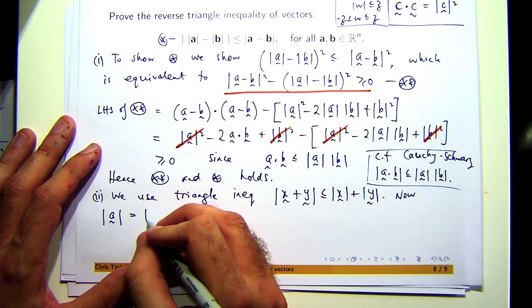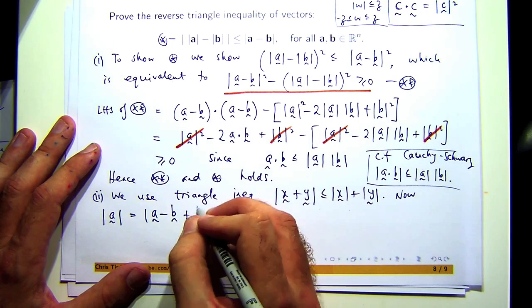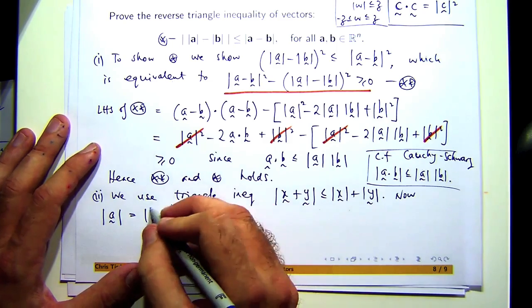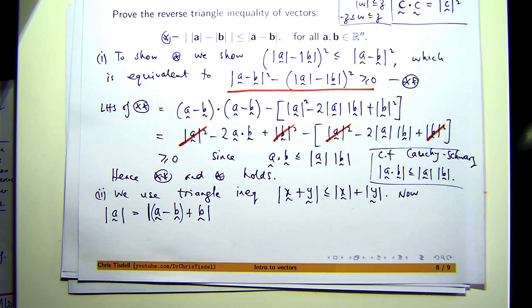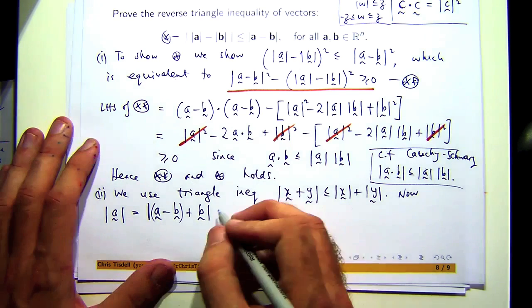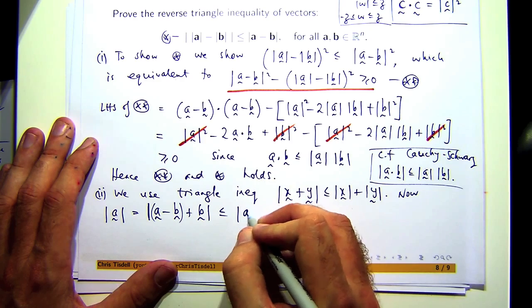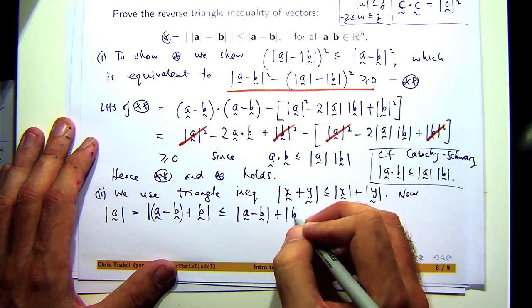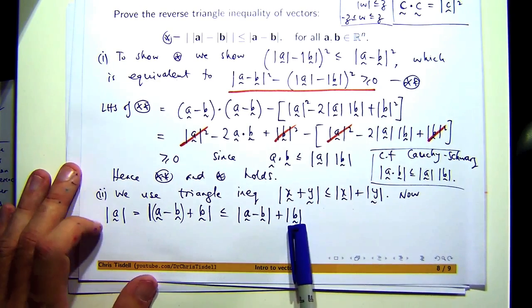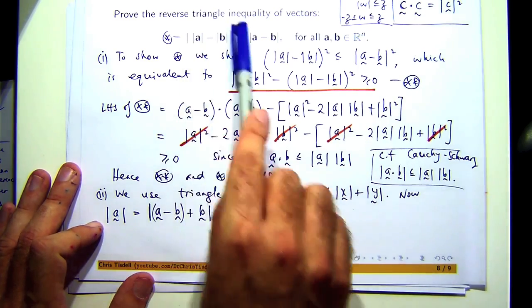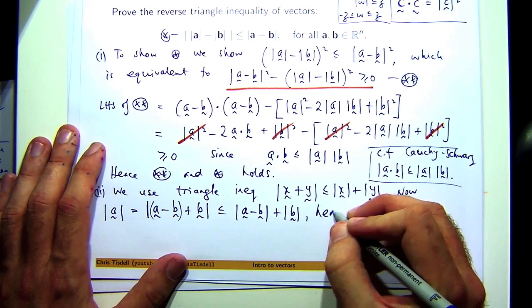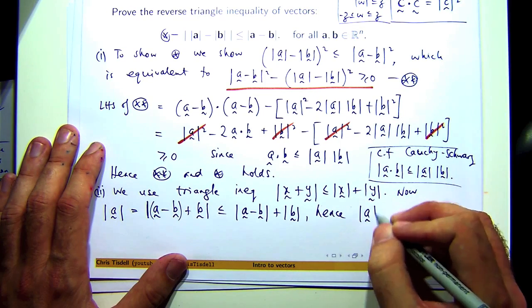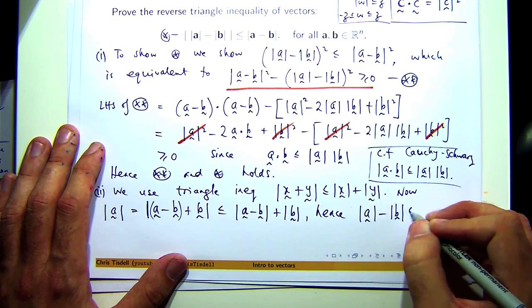So if I take away a b and I add a b and I sort of bracket them together, I can now apply the triangle inequality with x equals a minus b and y equals b. So if I take this length of b to the other side, I've got exactly that inequality with those absolute values covered up. Pretty neat, huh?